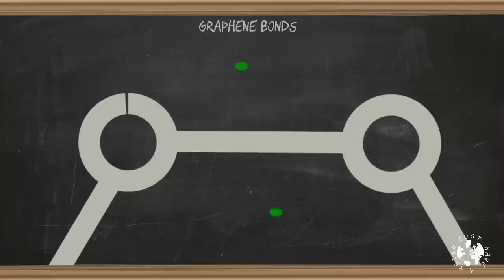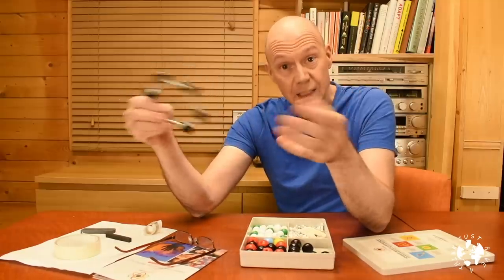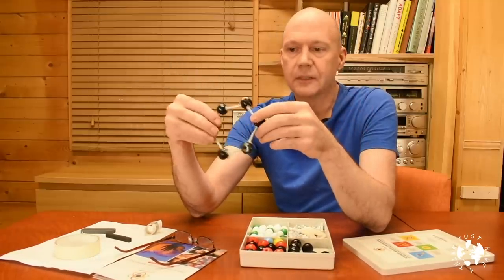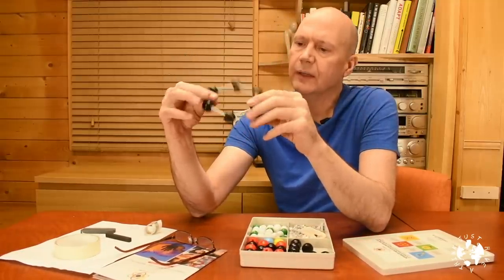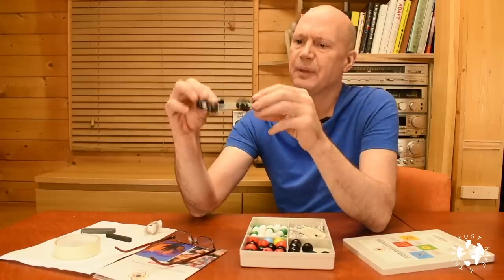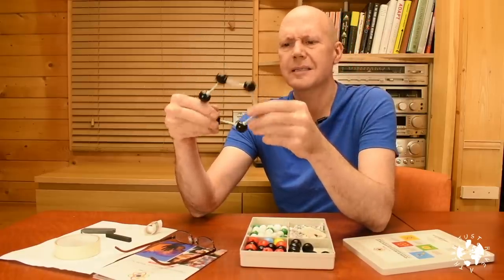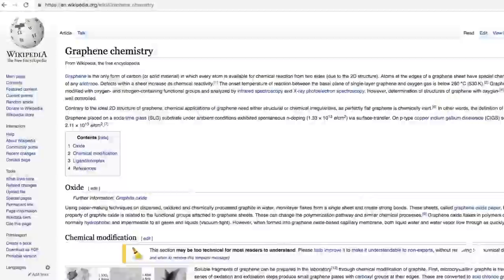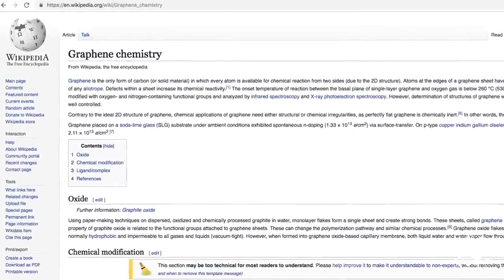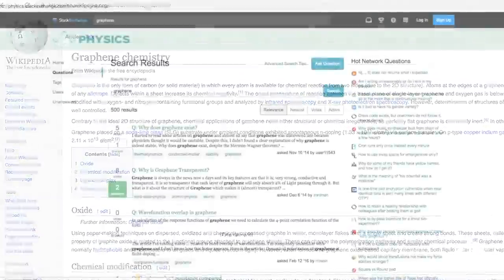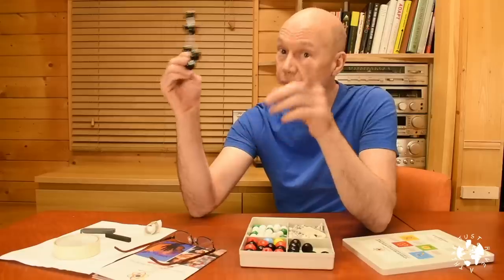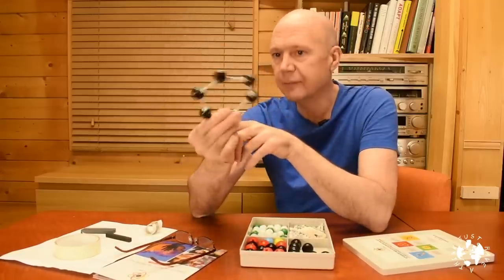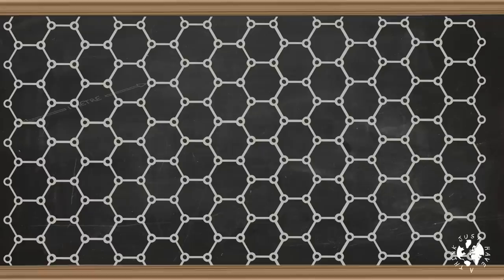Because each atom shares a pair of electrons with other atoms via this covalent bond, it makes that bond extremely strong. In reality there are also electrostatic forces, s, py, px orbitals, and sigma and pi bonds involved — all of that is well over my head, but you can read about it on Wikipedia or StackExchange. All that combined makes graphene 200 times stronger than steel.